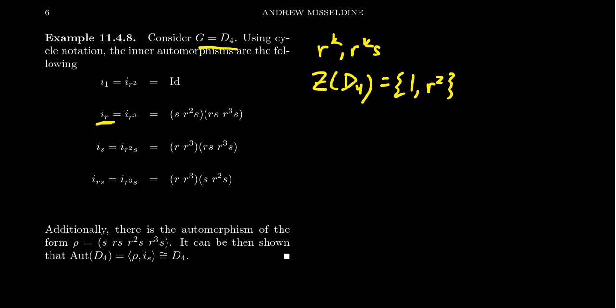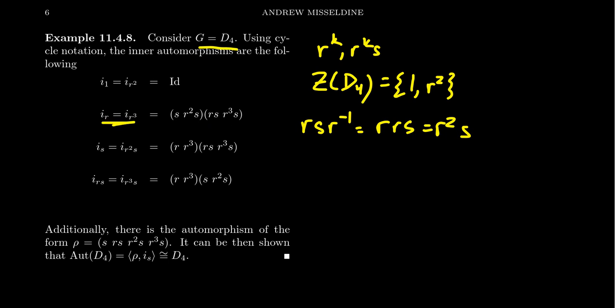If you conjugate by R: R commutes with every rotation, so rotations are fixed. But R does not commute with reflections. Taking R·S·R inverse: commuting R past S inverts the R, so this equals R·R·S = R squared·S. So conjugating S by R gives R squared·S. Similarly, conjugating R squared·S by R gives back S. Conjugating RS by R gives R cubed·S, and conjugating R cubed·S by R gives back RS. Writing these as permutations using cycle notation, the inner automorphism I_R is the permutation (S, R²S)(RS, R³S).